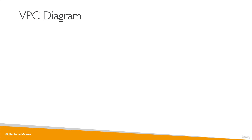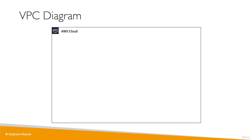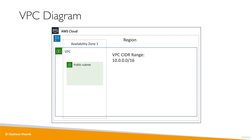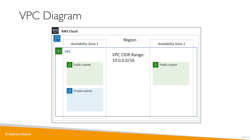Looking at a more complete VPC: within the AWS cloud we have regions, and within a region we have a VPC. The VPC has a CIDR range, which is a range of IP addresses allowed within it. The VPC can span two or three availability zones. AZ1 contains a public and a private subnet, and AZ2 also contains a public and a private subnet. So we have two AZs, one VPC, four subnets — two public and two private — and we can launch EC2 instances in each.